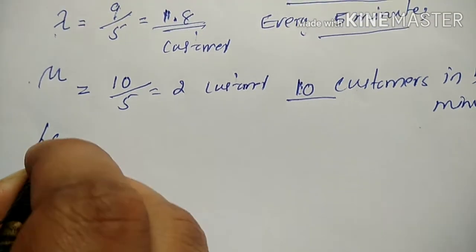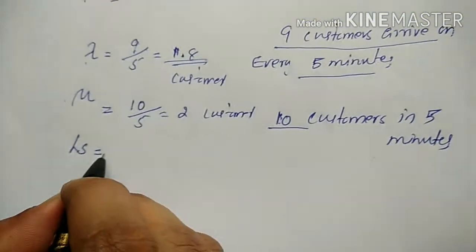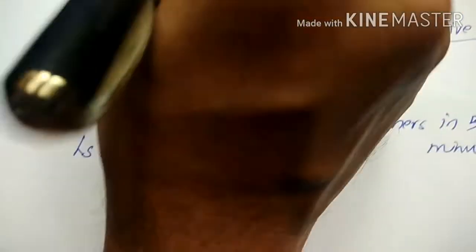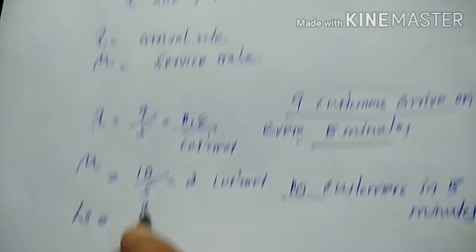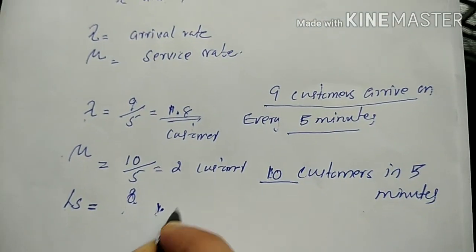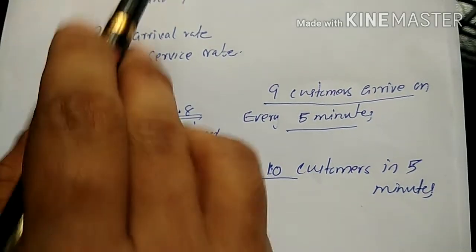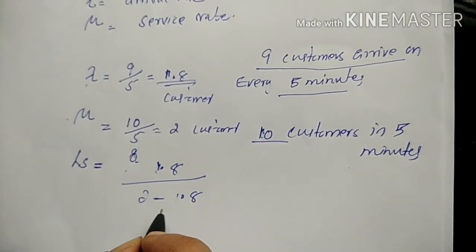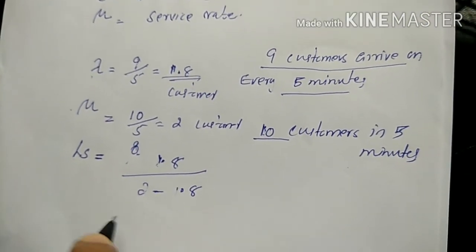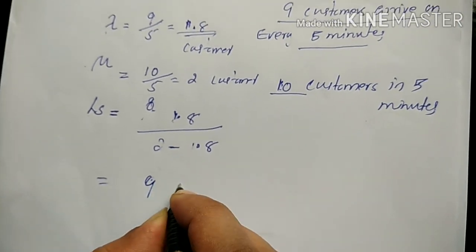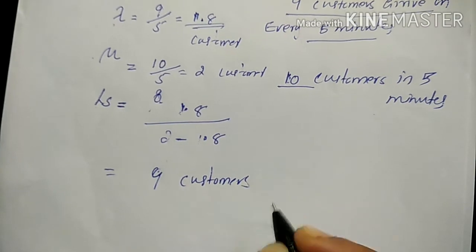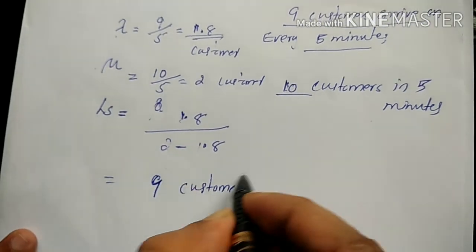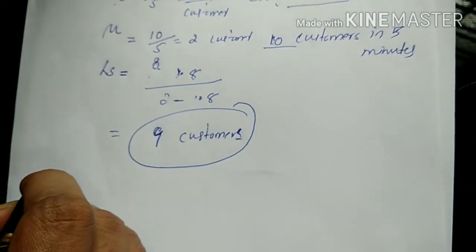Using the direct rate equation, the expected or average number of customers in the system, Ls, is equal to lambda divided by mu minus lambda. That is 1.8 divided by 2 minus 1.8, which equals 1.8 divided by 0.2, giving 9 customers.